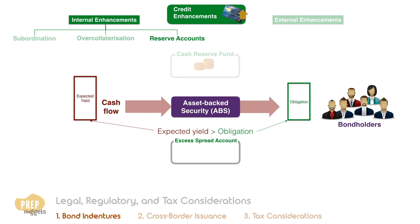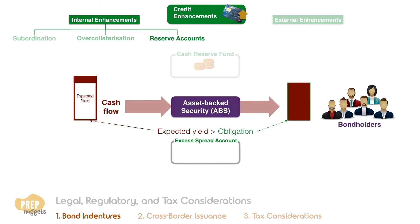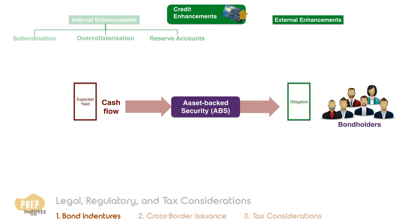With an excess spread account, the expected yield on the asset supporting the ABS is greater than the obligations on the bonds issued. This gives some protection if the yield on the assets is less than anticipated. If the assets perform as anticipated, the excess cash flow from the collateral is deposited into the excess spread account, and this reserve cash can be used to retire some of the outstanding bonds in the future.